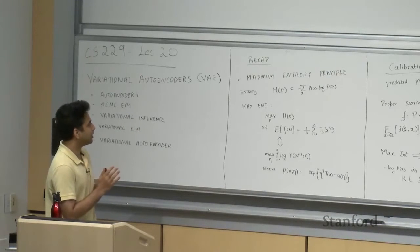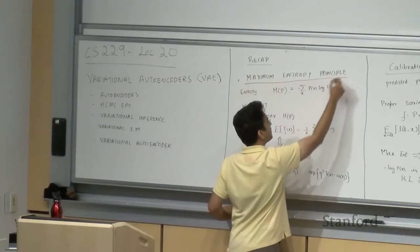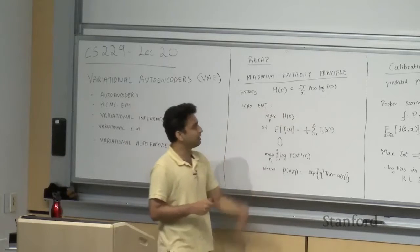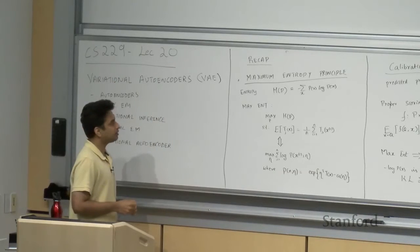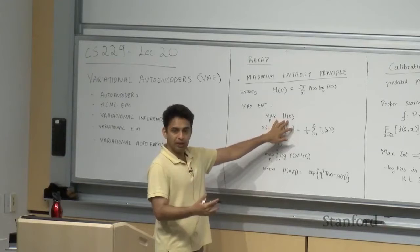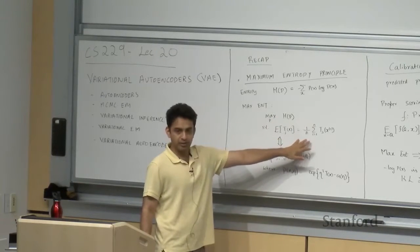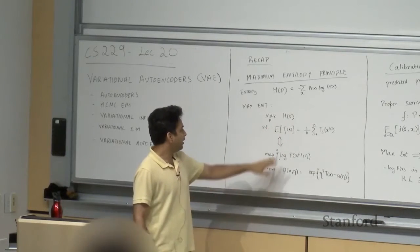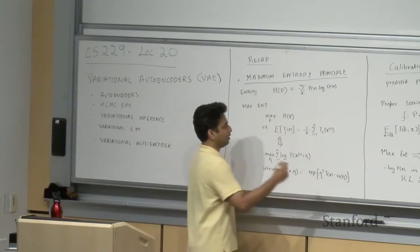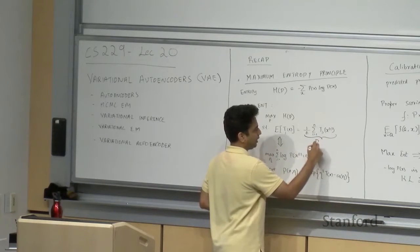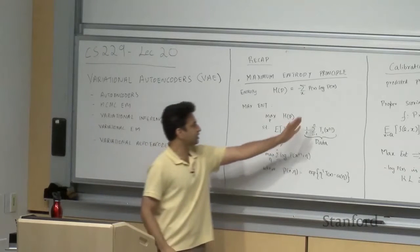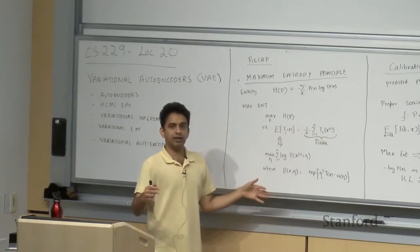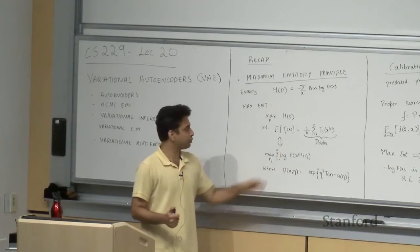A quick recap of what was covered in the last class: the maximum entropy principle, where entropy of a probability distribution is defined as the expectation of the negative log of the probability value itself. The maximum entropy principle suggests we should maximize the entropy of a probability distribution we're trying to estimate, subject to some constraints. Most of the time the constraints are expectations of some function of the variable over which the distribution is defined, and we want those expectations to equal the empirical expectations from data.